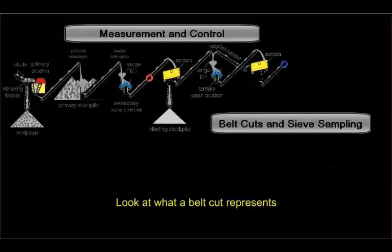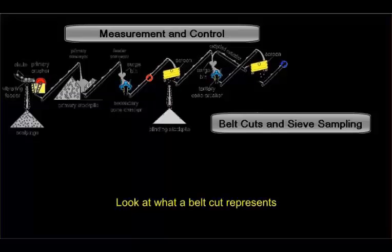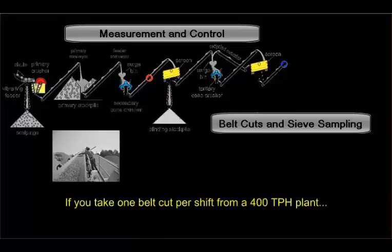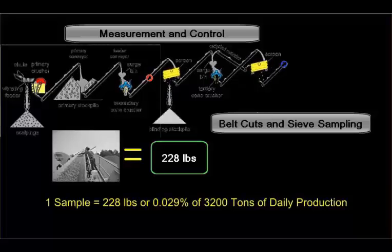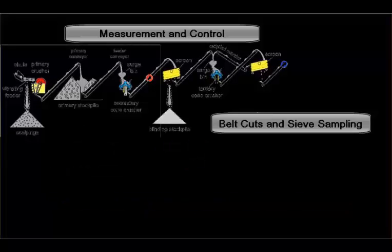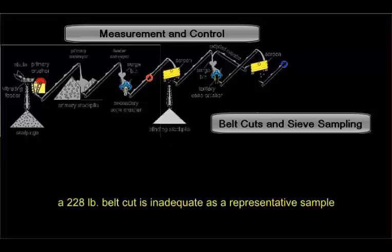If you take one belt cut per shift from a 400 ton per hour plant, that cut represents approximately 228 pounds, or 0.029% of the plant's 3,200 tons of daily production. The data resulting from a 228 pound belt cut is simply inadequate as a representative sample of the thousands of tons of product produced daily by a plant.